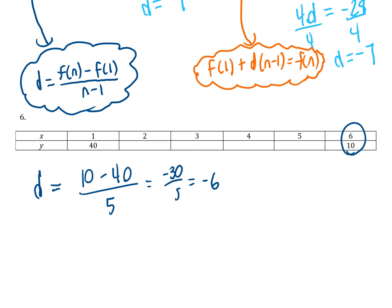Similarly, if I use the orange formula, starting at 40 plus d times n minus 1, so 6 minus 1, which is 5, that needs to equal 10. So we get 40 plus 5d equals 10, then subtract 40 on both sides to get 5d equals negative 30, divide by 5, and we get d equals negative 6.